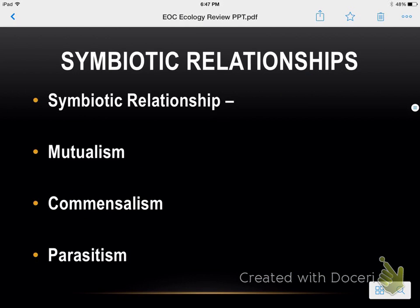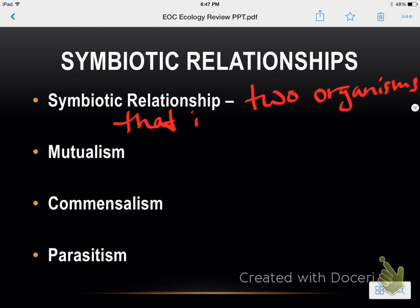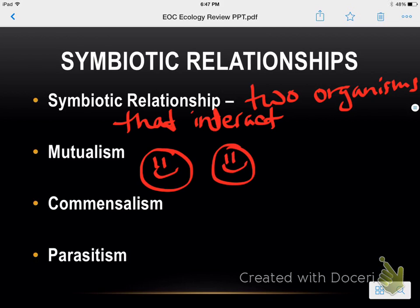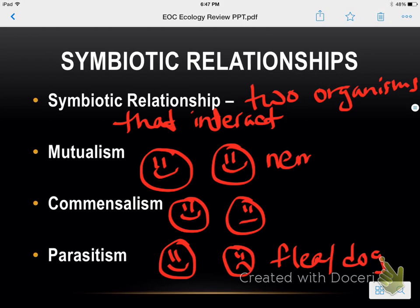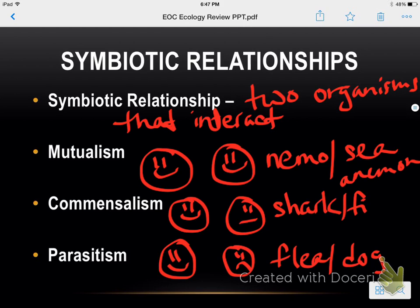Other symbiotic relationships: a symbiotic relationship in general is just two organisms that interact. Mutualism is when they're both happy — mutually happy. Commensalism is when one's happy and one's just kind of neutral. Parasitism is when one is happy and one is sad — like a flea and a dog. Mutualism would be like Nemo (clownfish) and a sea anemone. Commensalism is like the shark with that fish that swims below it to get food scraps.